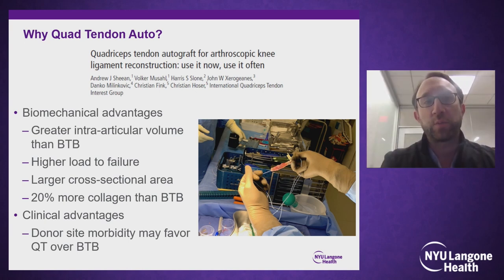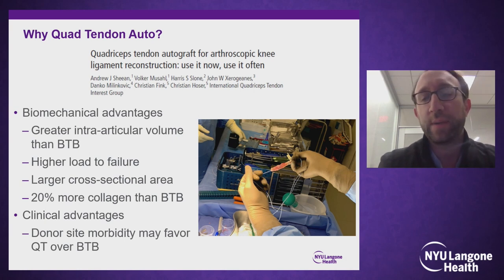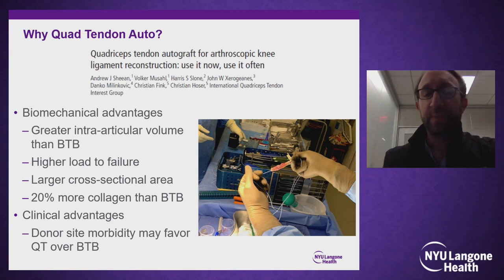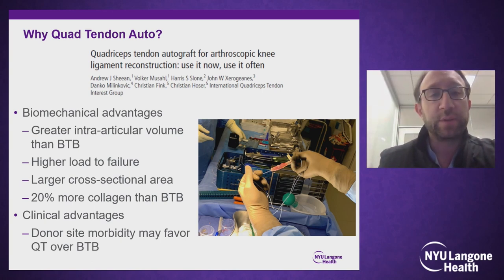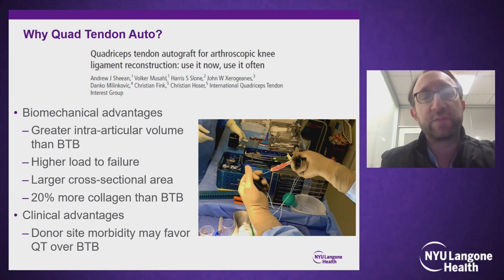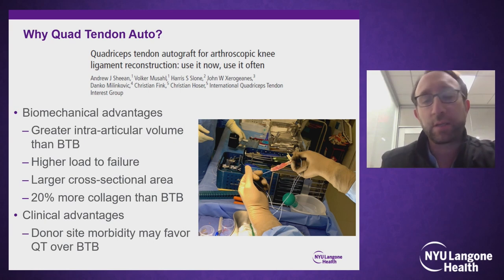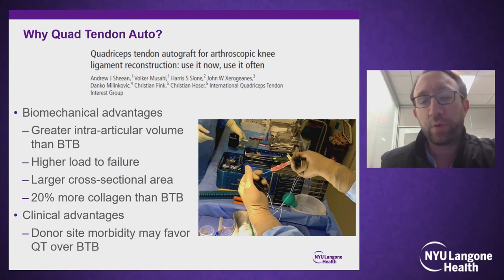Why quadriceps tendon autograft? In the appropriate setting, it can be an extremely strong, robust, and useful technique for either primary or revision ACL reconstructions. Biomechanical advantages have been borne out compared to BTB or hamstrings — the quad is one big, robust piece of tissue with a higher intra-articular volume than traditional bone-patellar-tendon-bone. It has also been proven to have a higher load to failure, a larger cross-sectional area, and more collagen than BTB. Clinical advantages include less donor site morbidity, shown to be less than both hamstrings or bone-patellar-tendon-bone.